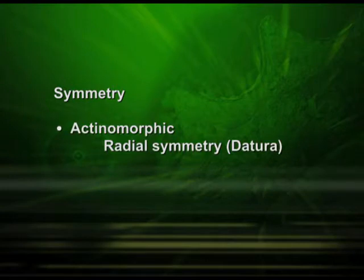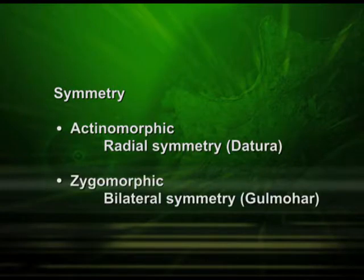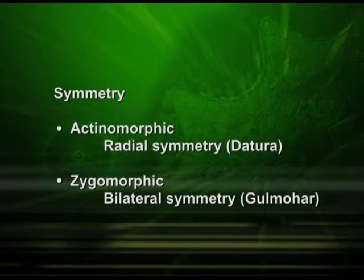Symmetry of the flower is another important characteristic. The flowers may be actinomorphic or zygomorphic. In actinomorphic flowers — for example, in datura — they show radial symmetry. In zygomorphic flowers — example gulmohar — they show bilateral symmetry.